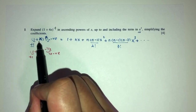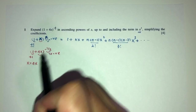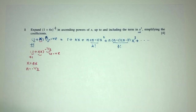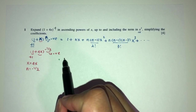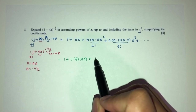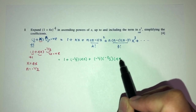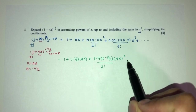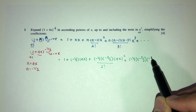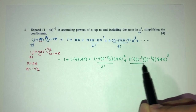By comparison, here we have x, but in our expression we have 4x, so x is replaced by 4x. And n here is −1/2. Plugging these values into the formula, we get: 1 + (−1/2)(4x) + (−1/2)(−3/2)(4x)²/2! + (−1/2)(−3/2)(−5/2)(4x)³/3!.